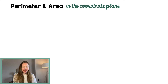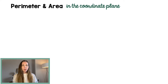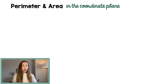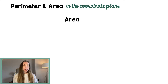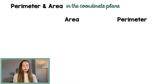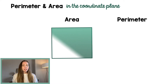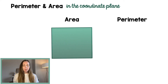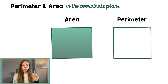Today we are going to learn how to find perimeter and area in the coordinate plane. Let's begin with a review of what area and perimeter even are. Area and perimeter are topics you probably learned in middle school. We've talked about them a little bit in algebra and also in geometry already this year. Area is the square units that take up space inside a figure, and perimeter is the distance around that figure.